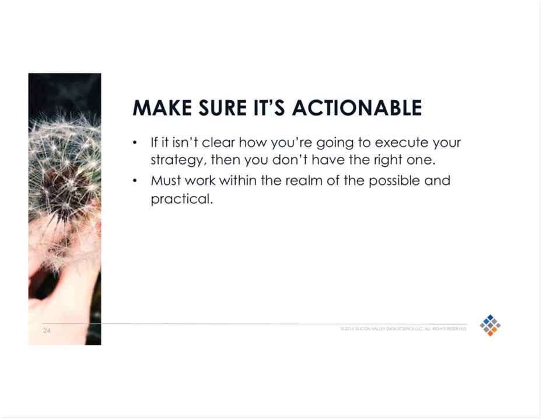The last recommendation is that you need to make sure the strategy you create is actionable. Part of the reason we follow that path from business objectives to use cases to workloads and then describe projects is that it forces you to think about the actions you will take and gives you a clear notion of how you're going to execute. If you can't articulate what you're going to do on day one after you've finished your strategy, then you don't have the right strategy. You need to work within the realm of the possible, respond to complications, and be practical about what you can accomplish and in what timeframe. But if you're clear about how the strategy leads to action and you've been honest in the roadmap, you end up with an actionable strategy that actually helps you achieve those business objectives.